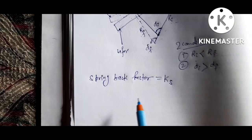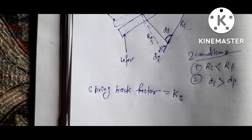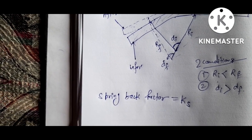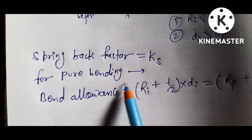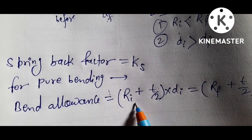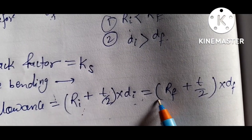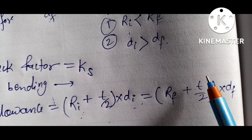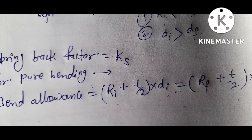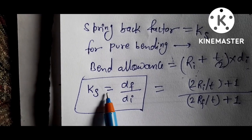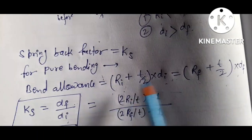The spring back factor Ks is determined using bend allowance, which is the same before and after bending. For pure bending, bend allowance equals (ri + t/2) × alpha i, and also equals (rf + t/2) × alpha f. The spring back factor Ks equals the final bend angle divided by the initial bend angle.